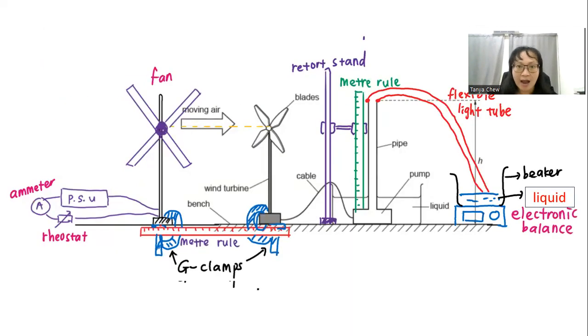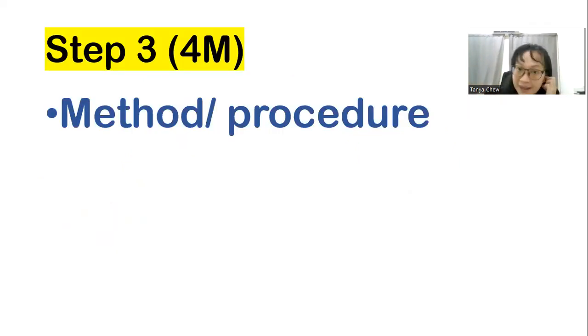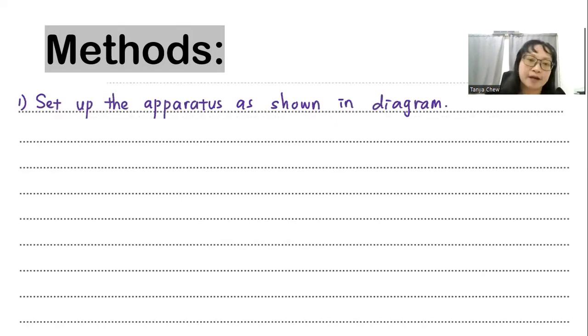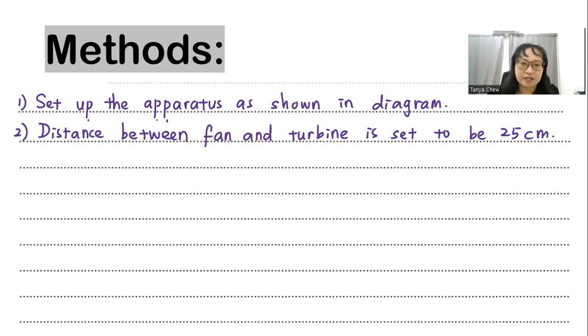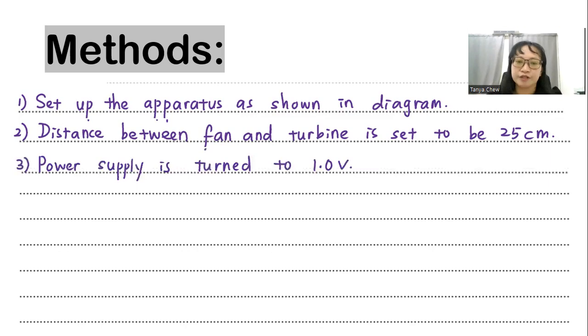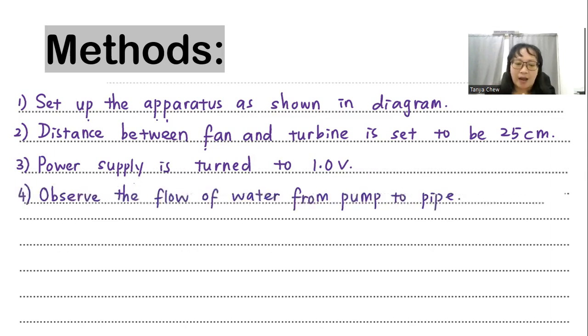And step three, once you're done with your diagram, this is my whole labeled diagram. So I can move on to method or procedure. So when I look at the diagram, it is very easy for me to plan my method or my procedure. Methods, first step, I start with set up the apparatus as shown in the diagram. I want the examiner to look at my diagram. So I direct the examiner to my diagram. And I make sure that the distance between the fan and the turbine is set to be 25 cm, as close as possible, as long as they're not touching each other. And the power supply is turned to 1 volt. You might want to turn it to 1.5 volt, 2 volt. It is your choice.